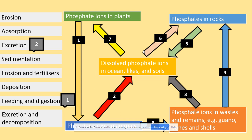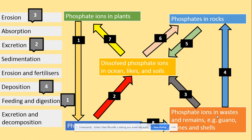There will be dissolved ions, for example in the ocean, lakes, and soils. Phosphate ions in the waste and remains will then undergo erosion and be found as dissolved ions in the ocean, lakes, and soil. What else could happen to them — the process of deposition — so they will then be found in the rocks. From the rocks, erosion and fertilizers act, so they dissolve phosphate ions back into oceans, lakes, and soils.